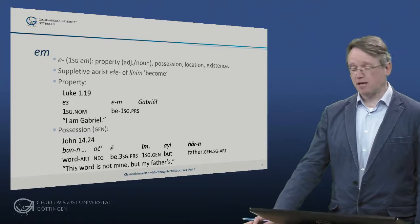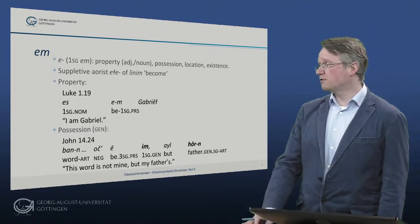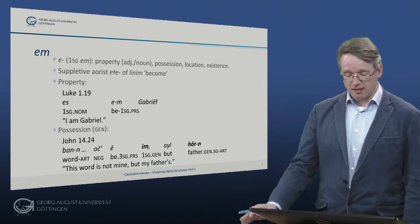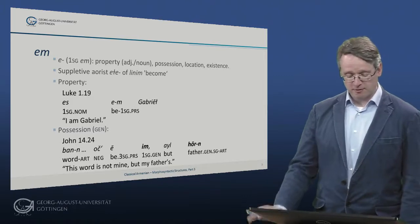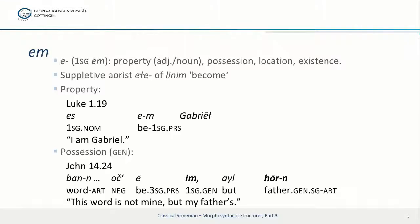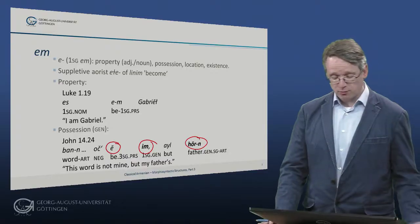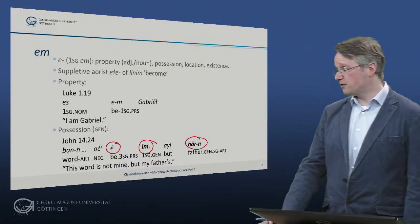Let's have a look at how this works. We have property predication, for example 'jesem gabriel' — I am Gabriel. We have possession with the genitive, as in 'banen voce im' — here is our copular verb and 'hor,' the genitive of the word for father. So: this word is not mine, but my father's.